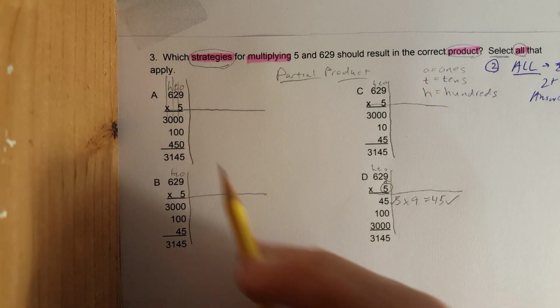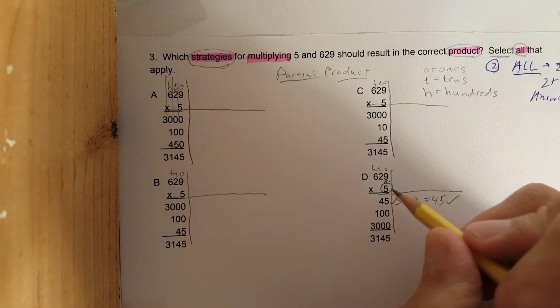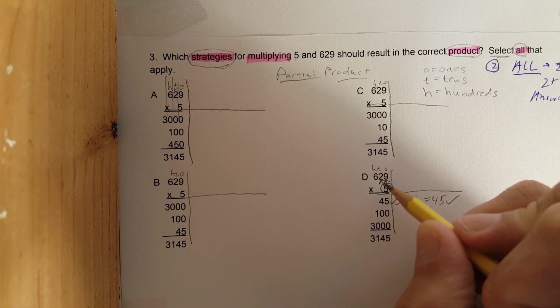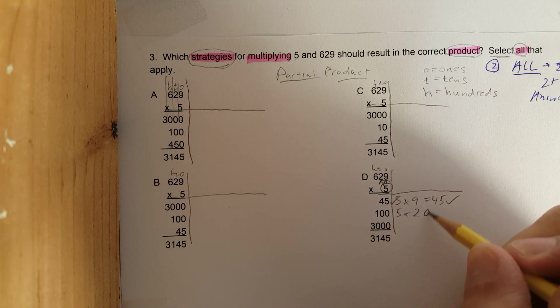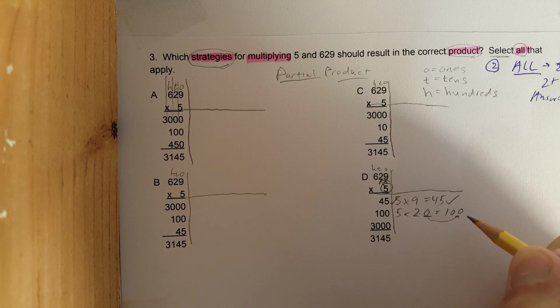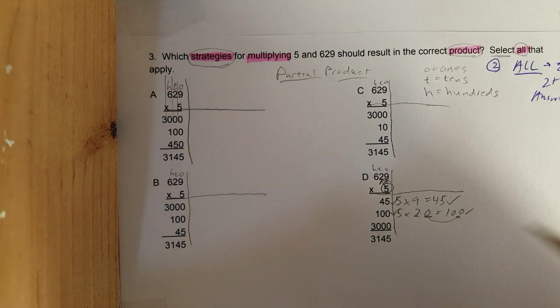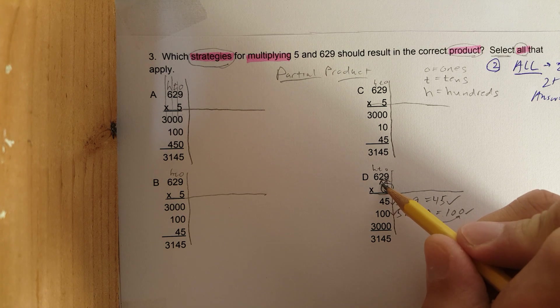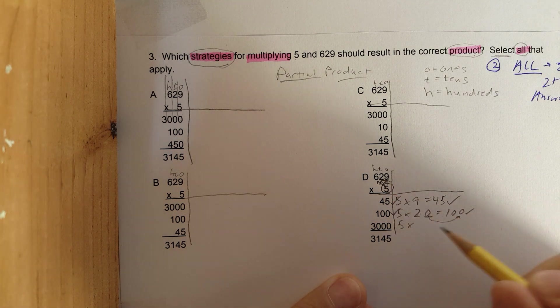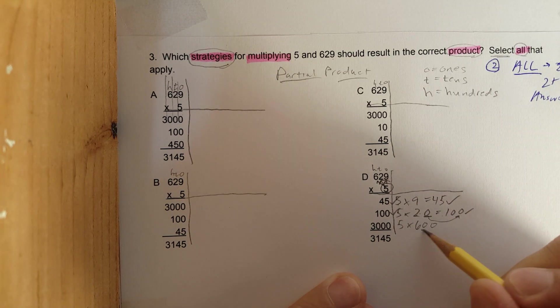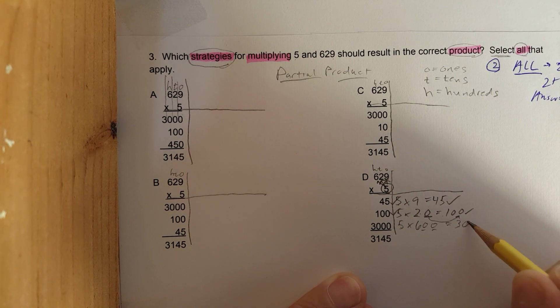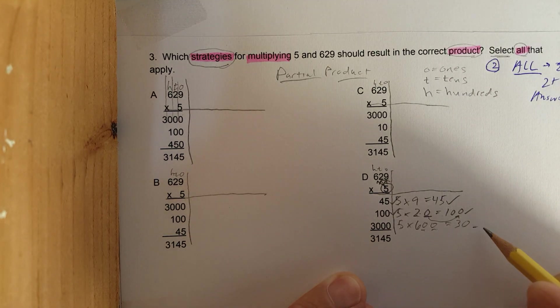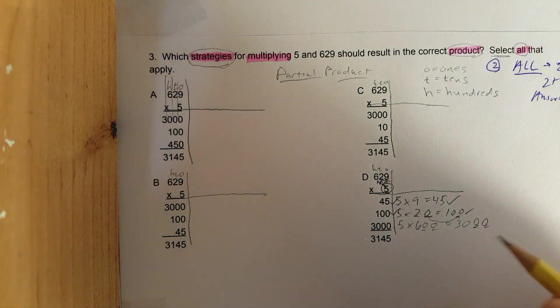5 times 9 is 45. Check, check. Notice I went from A and jumped down to D. When you're solving problems, especially on the test, go wherever you want. Next you go to the tens place: 5 times 20. This is 5 times two tens. 5 times 2 is 10 and I add a zero, I get 100. Now we multiply the hundreds place: we take 5 times 600.